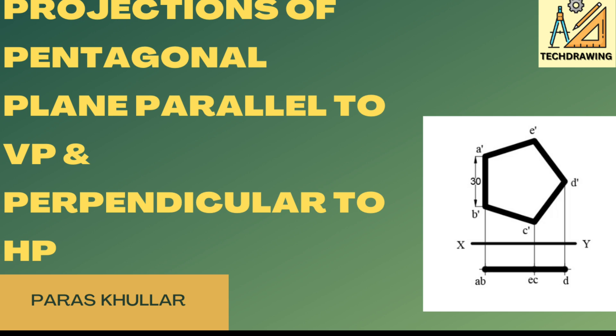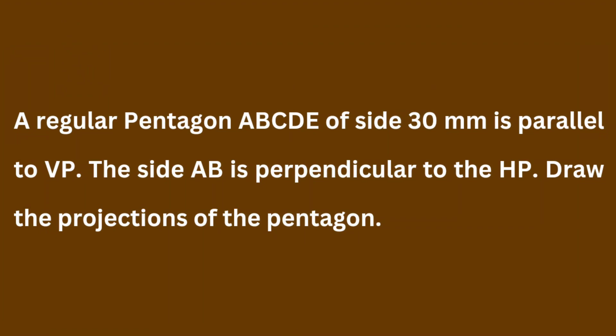In this video we will discuss the projections of planes when the plane is parallel to VP and perpendicular to HP. A regular pentagon ABCDE of side 30 mm is parallel to VP and therefore perpendicular to HP. The side AB of the plane is perpendicular to HP, so we have to adjust the plane such that side AB is perpendicular to HP and draw its projections. Since it is regular, all edges of the pentagon are equal.